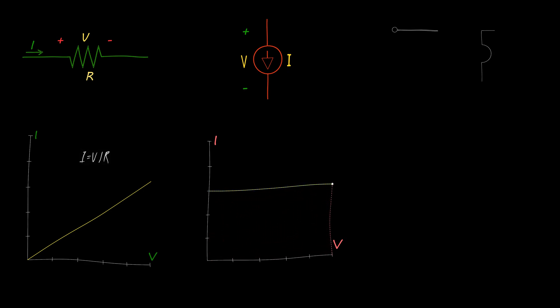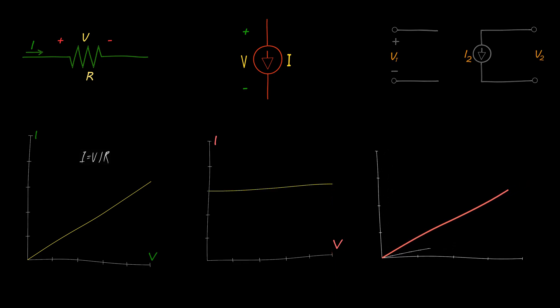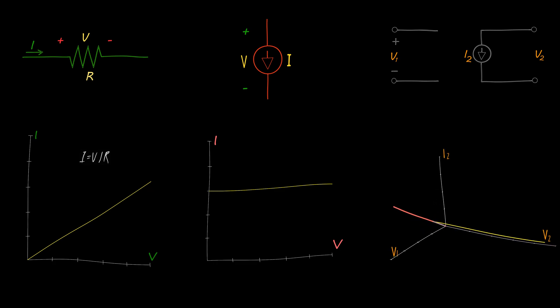A voltage-controlled current source is a current source delivering a current proportional to some other voltage in the circuit. The current is not sensitive to the voltage across it — it depends on some other voltage in the circuit. A voltage-controlled current source takes voltage as input and produces output current depending only on the input voltage.